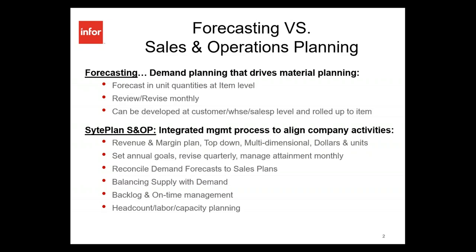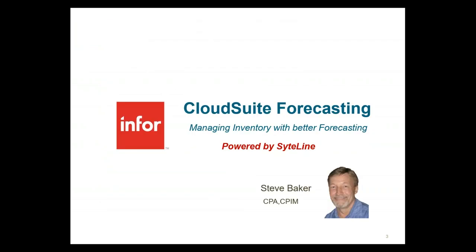The S&OP process application we call Site Plan is kind of the next level beyond just demand planning. It's planning for revenues and margin, cost of goods sold, setting goals, and managing attainment towards those goals. It's all around the process of bringing the company together around an integrated management process to balance supply and demand. We will start off with the forecasting application and then go into Site Plan.